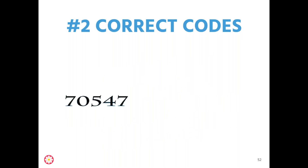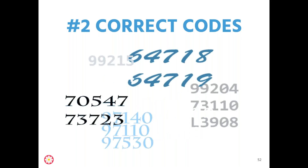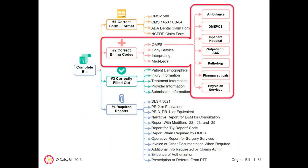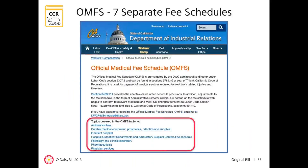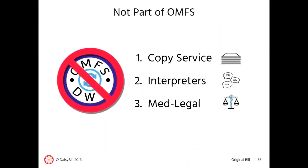The second billing requirement of a complete bill is the use of correct billing codes. Correct billing codes, for the most part, means using codes from the DWC's official medical fee schedule, or OMFS. The DWC maintains a website listing relevant information about the seven separate fee schedules. However, there are also three fee schedules that are not part of the OMFS.